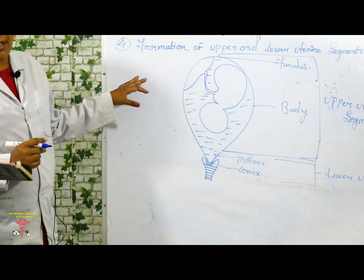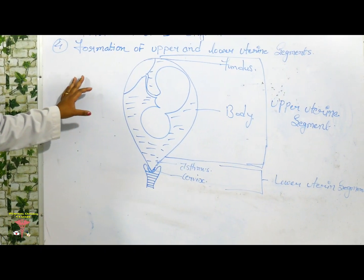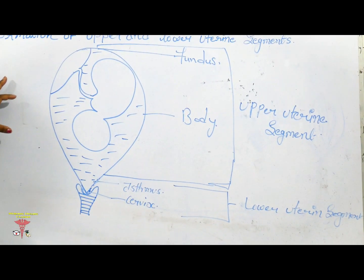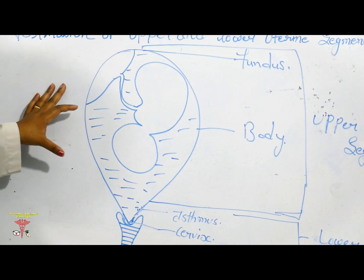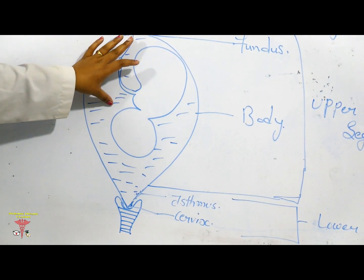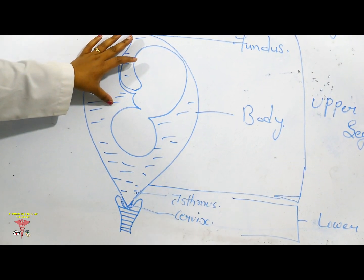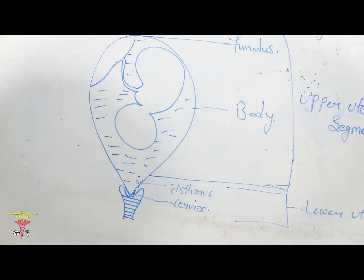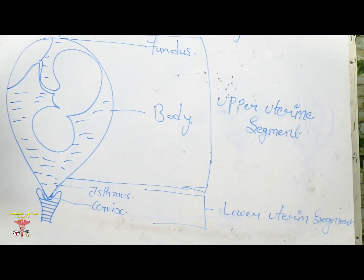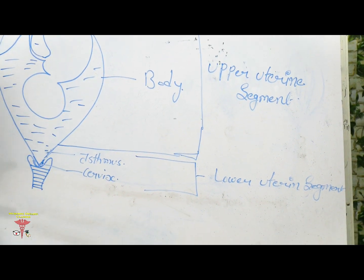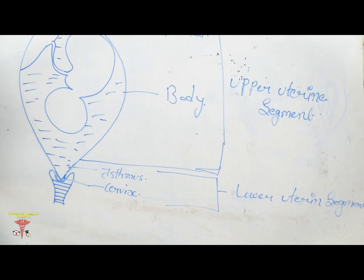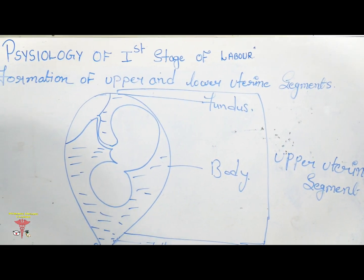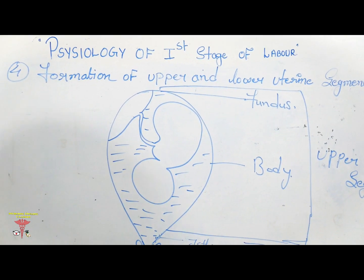At the onset of labour, the thick upper uterine segment is the muscular part of the fundus. This part bears the contractions and retractions and transmits them to the lower uterine segment, hence allowing mechanical stretching which increases the uterine contractions and retractions.